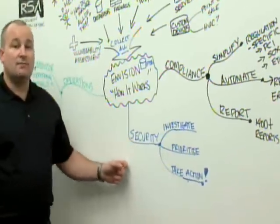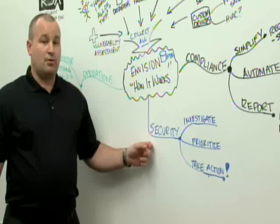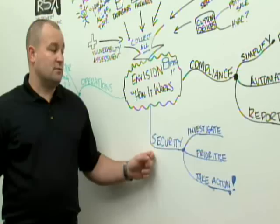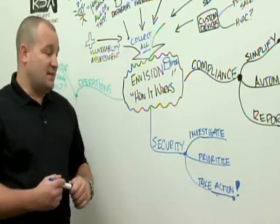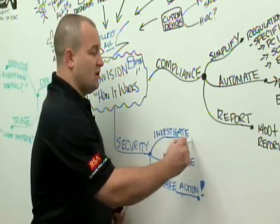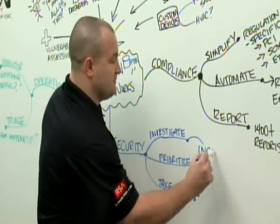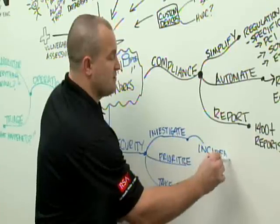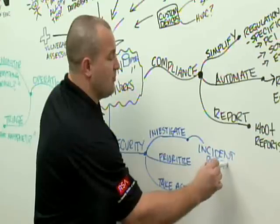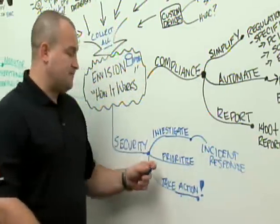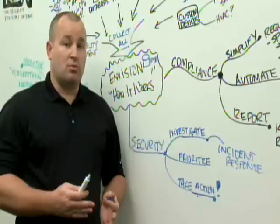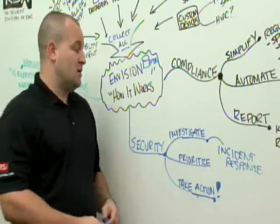The second use case that we look at is security operations. How do we improve the security posture of the customer? First of all, we can help them investigate data that they've never had access to before. The investigation can often lead to incident response. For this incident response, we can prioritize the incidents and help them respond in a prioritized manner. When you look at security events, you need to know, is this a small problem or a big problem?